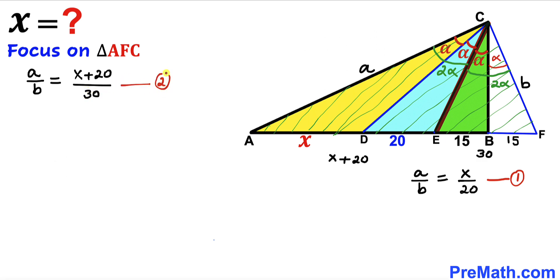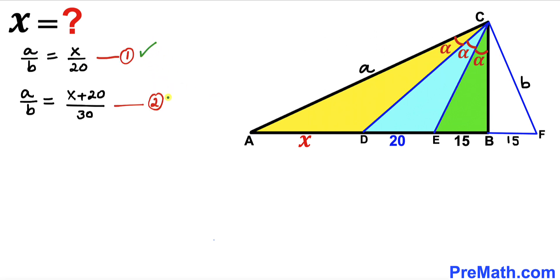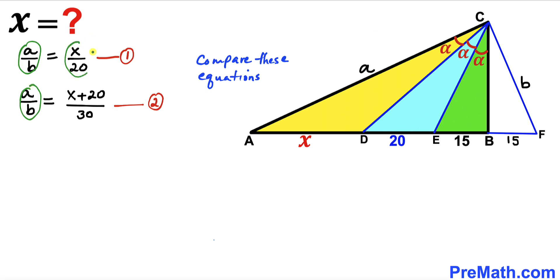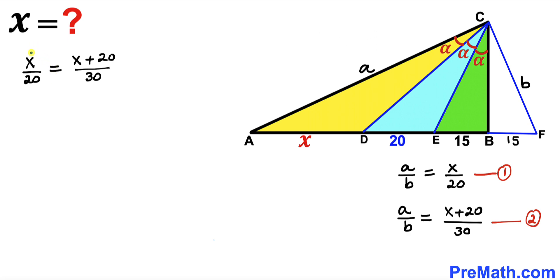We now have Equation 1 and Equation 2. Comparing them, the left-hand sides are identical, so we can equate the right-hand sides: X divided by 20 equals X plus 20 divided by 30. This gives us the proportion X over 20 equals (X plus 20) over 30, which we will now solve for X.